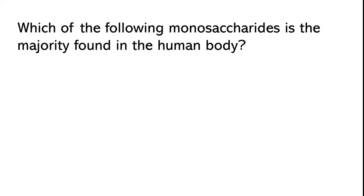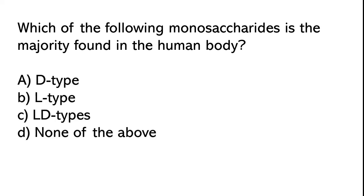Which of the following monosaccharides is the majority found in the human body? D type, L type, LD types, none of the above. The correct answer is option A: D type.